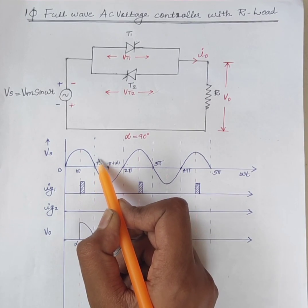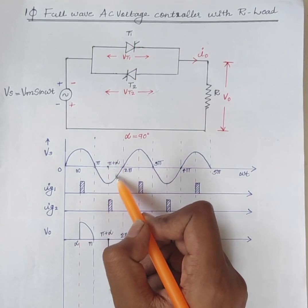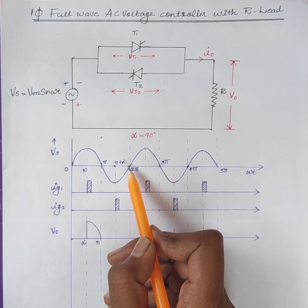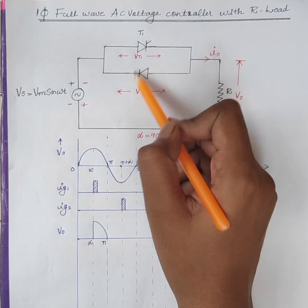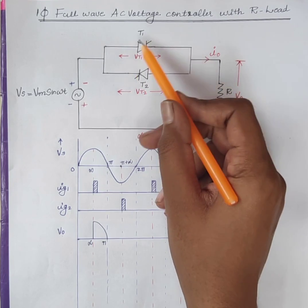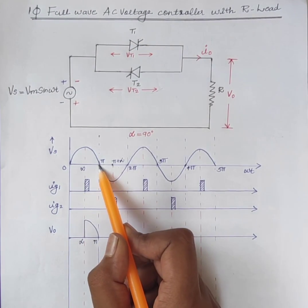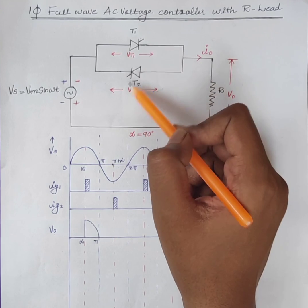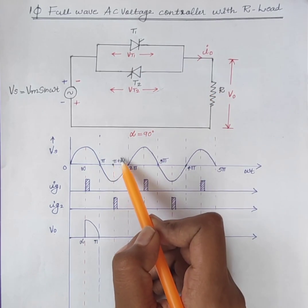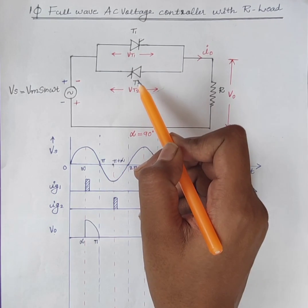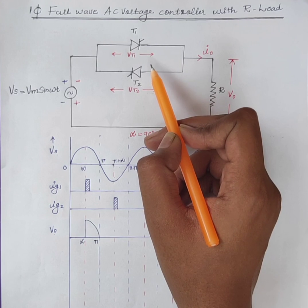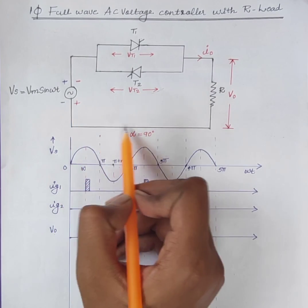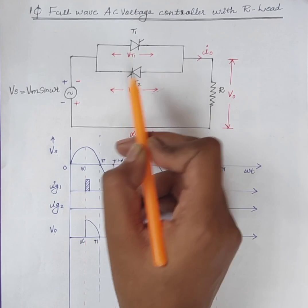At omega-t equal to pi, T1 is subjected to reverse bias and is therefore commutated. During the negative half cycle, T2 is forward biased and T1 is reverse biased. But from pi to pi plus alpha, no firing pulses are given to T2. Therefore, both thyristors are in the off state. At omega-t equal to pi plus alpha, firing pulses are given to T2 and T2 conducts. Current flows through the path Vs, load, T2, back to source.